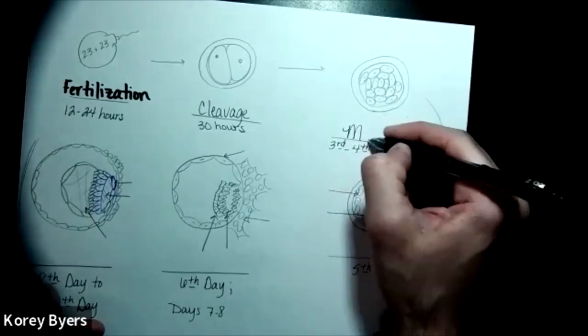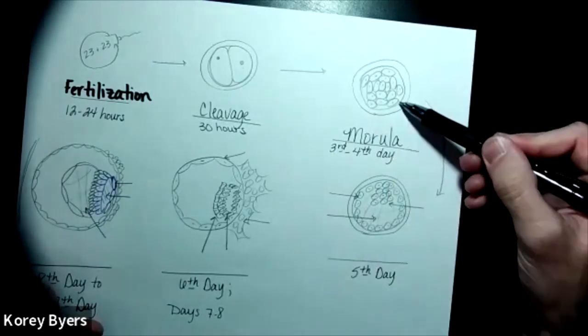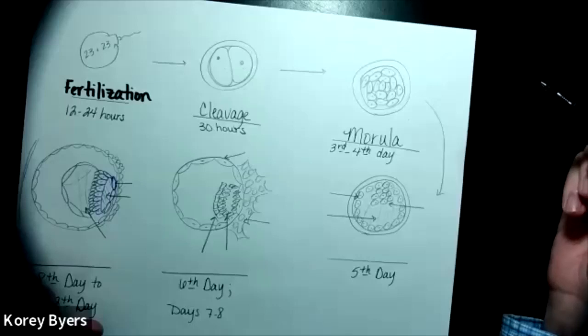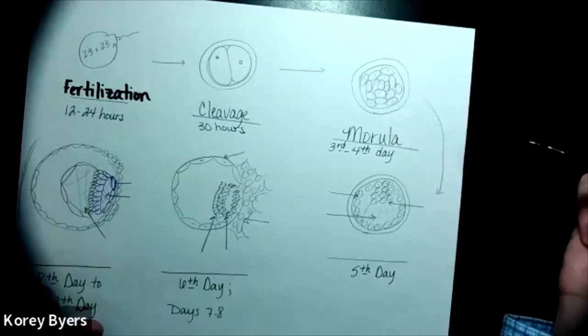This is called the morula. So the morula is that hardened zona pellucida filled with 16 of those undifferentiated cells. No differentiation has occurred, only mitosis at this point.